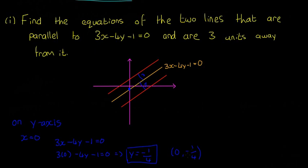So what does this tell us? This point (0, minus 1 over 4) is going to be exactly 3 units from this red line and this red line as well. It's 3 units of distance. It's the same as any other point on this orange line because they're parallel — they won't get closer or further apart. We're going to use this point as a reference point.